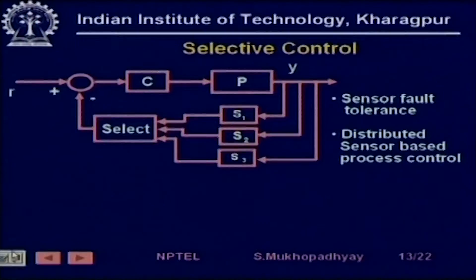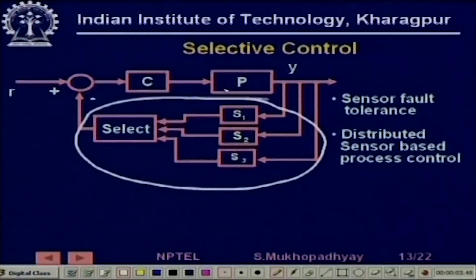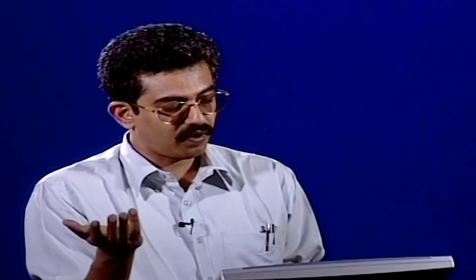In selective control, the loop is standard — the only change comes in how sensor signals are handled. What we have shown is that the same process variable, for example room temperature, is being sensed by three different sensors at three different locations. So these signals are not identical, but they will be similar. There is some selection or signal processing scheme applied here.